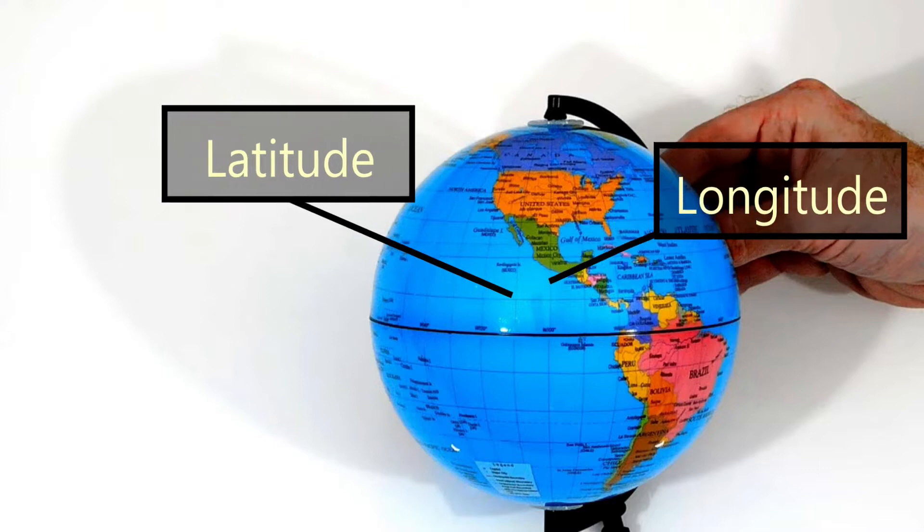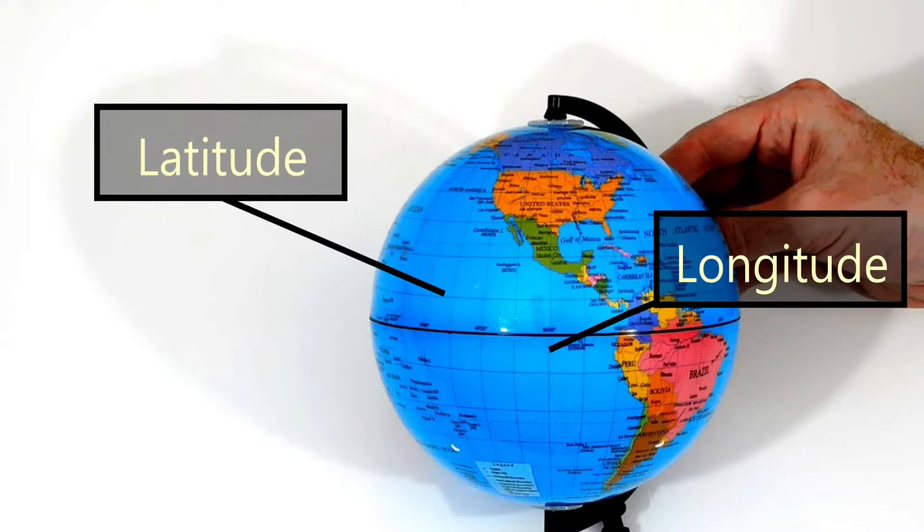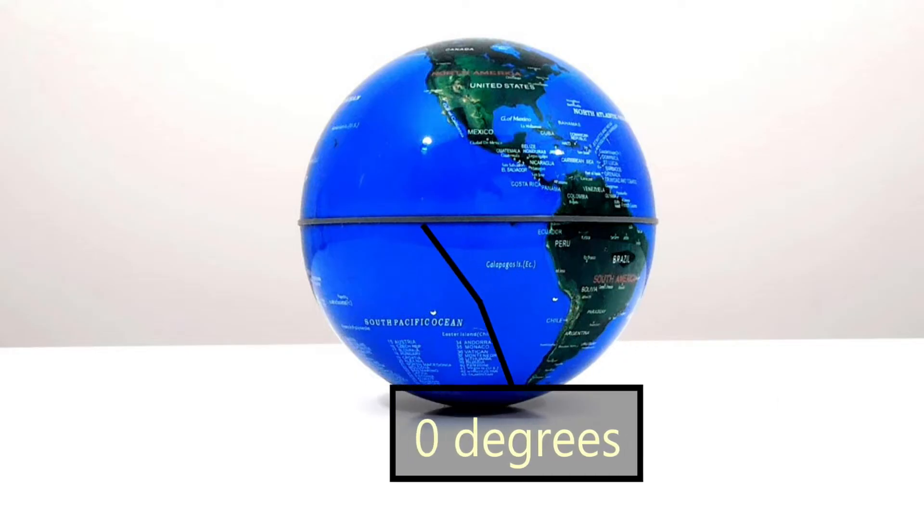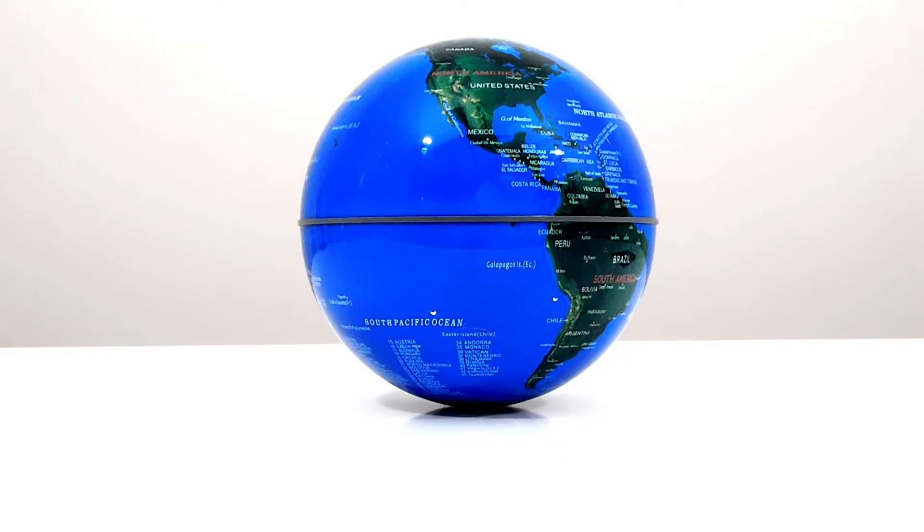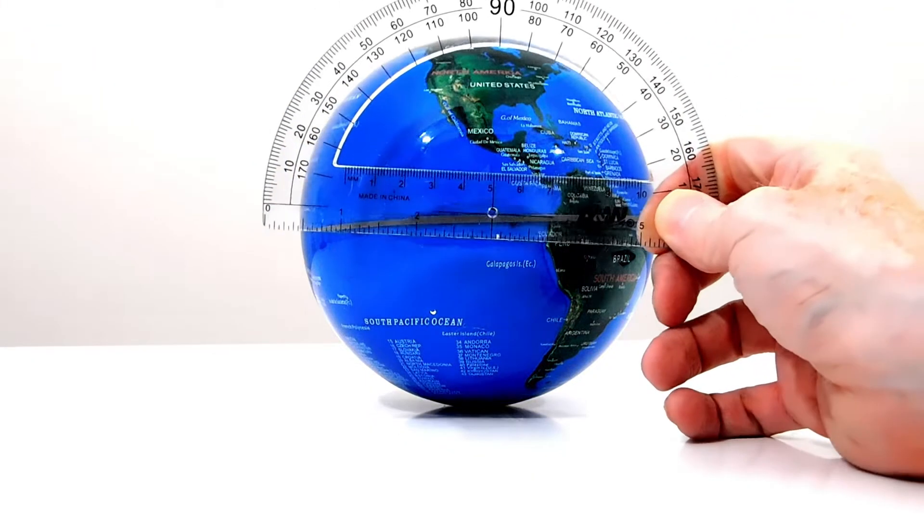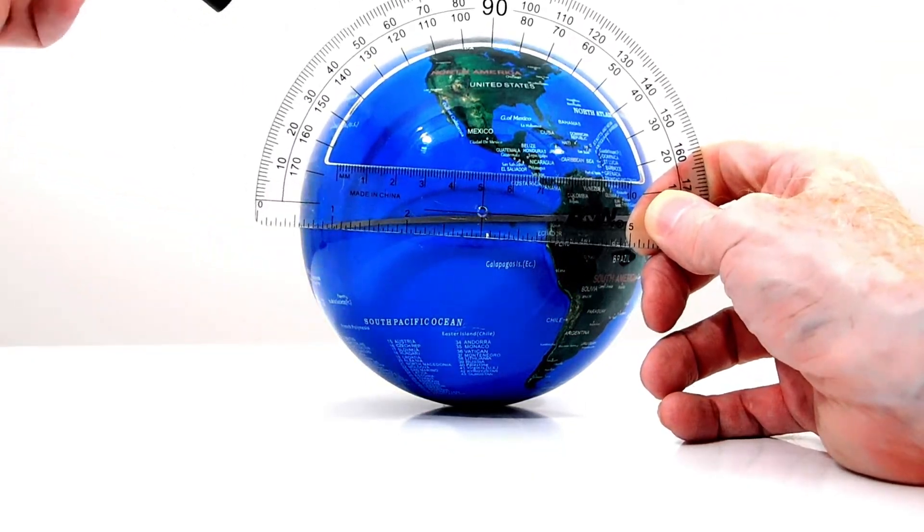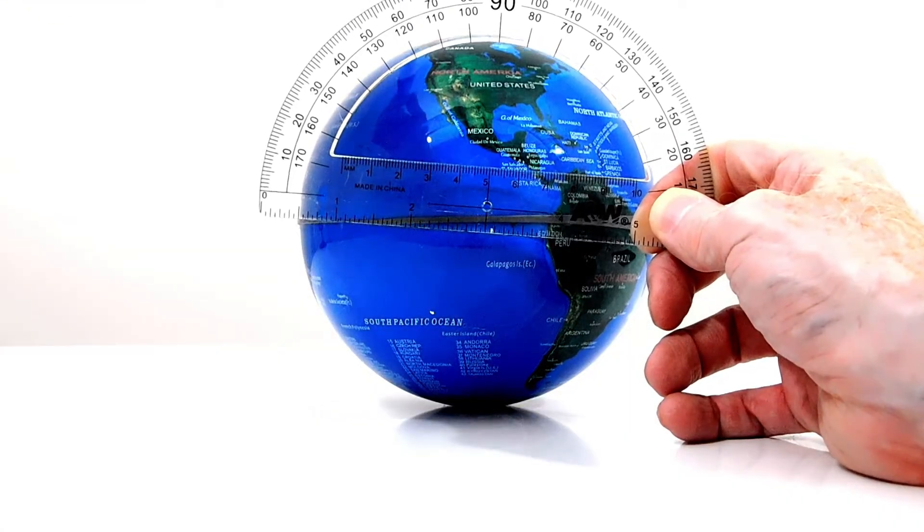Let's start with latitude, which are the horizontal lines on the grid. The equator is a horizontal line that goes through the widest part of the Earth. We call that zero degrees. Then, we put a protractor alongside the globe and mark where 10, 20, 30, 40, 50, 60, 70, and 80 degrees are.